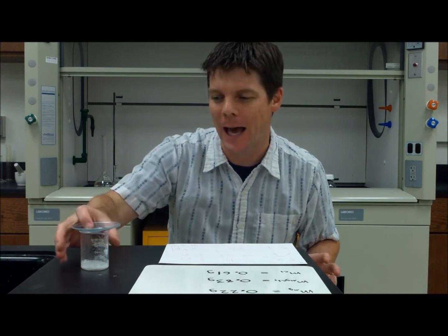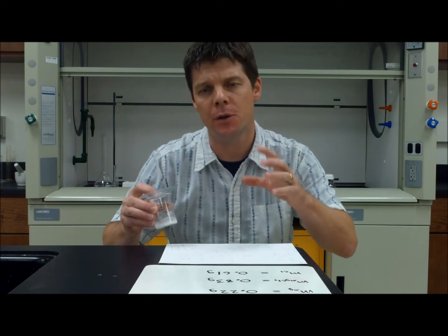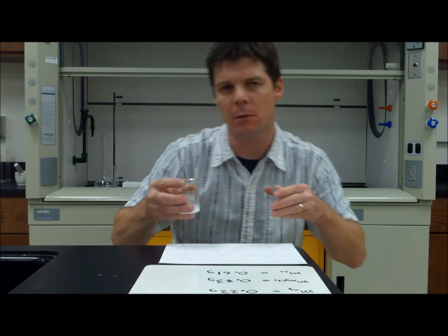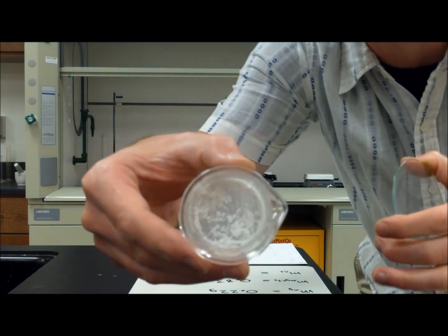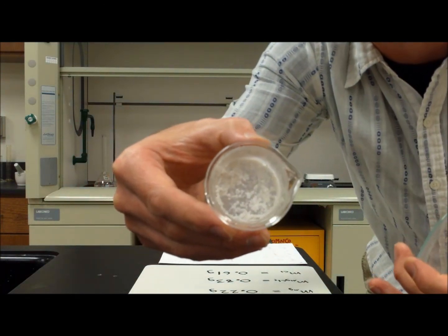All right, so now we've completed the magnesium chloride lab and remember we were reacting magnesium with hydrochloric acid to produce a salt, magnesium chloride. And I'll let you go ahead and see what that looks like here. So we see that the magnesium chloride is a white crystalline material.